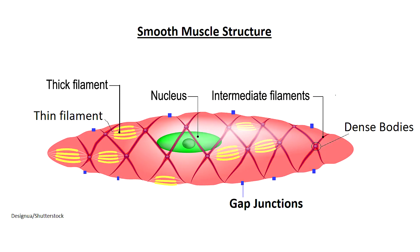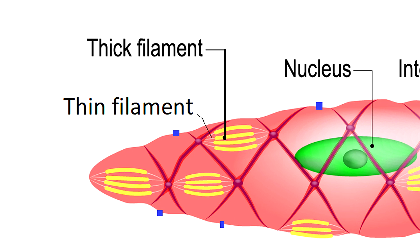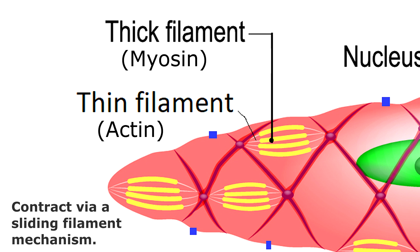However, smooth muscle tissue does consist of the same thin actin filaments and thick myosin filaments found in both skeletal and cardiac muscle tissue, which work to contract the muscle fiber via a sliding filament mechanism. These filaments are dispersed throughout the cytoplasm of the cell.